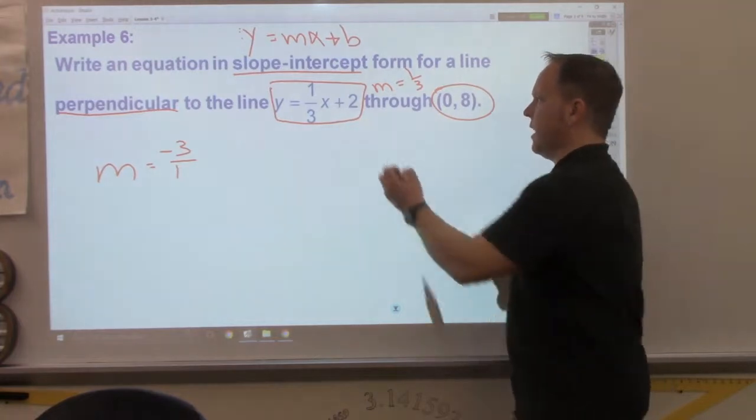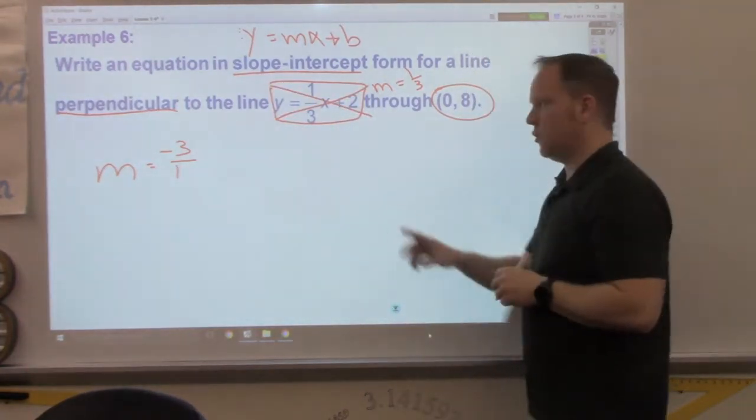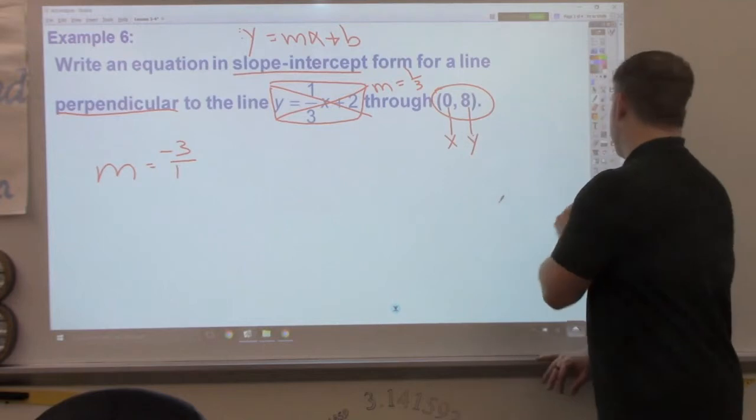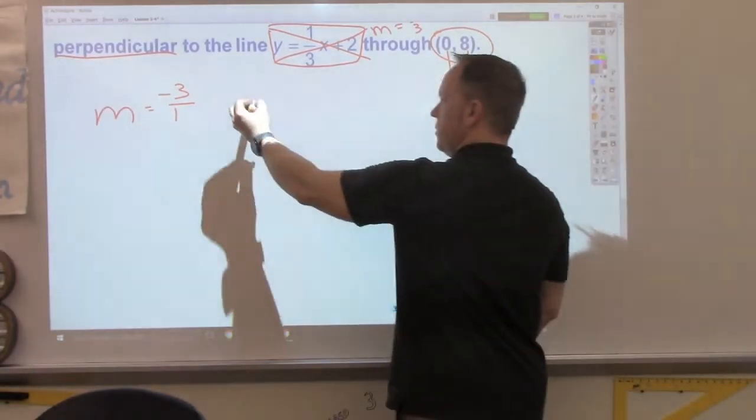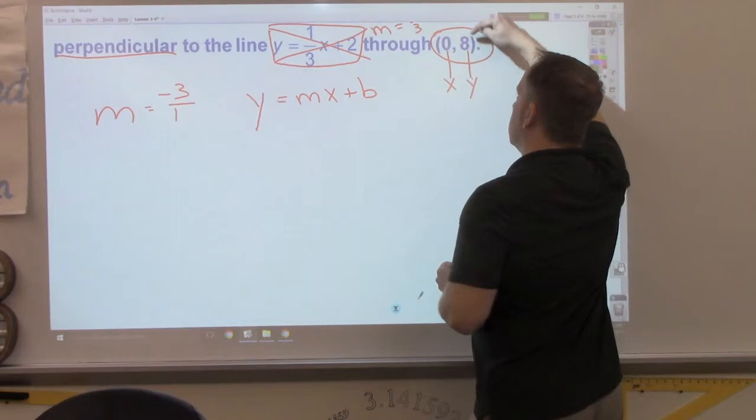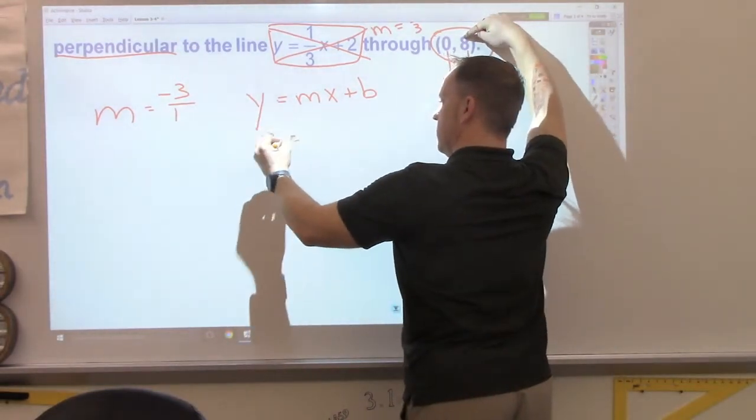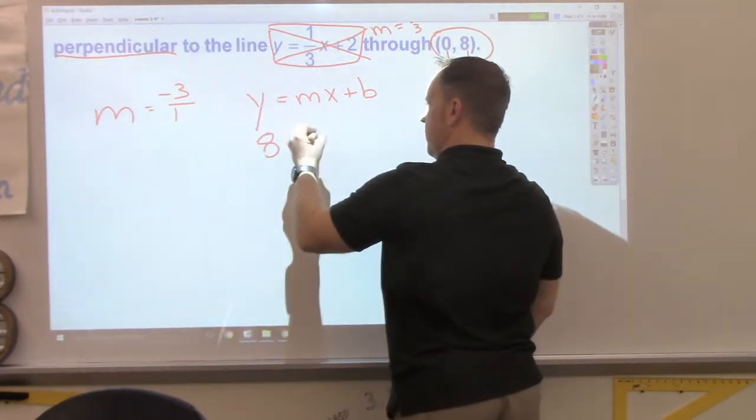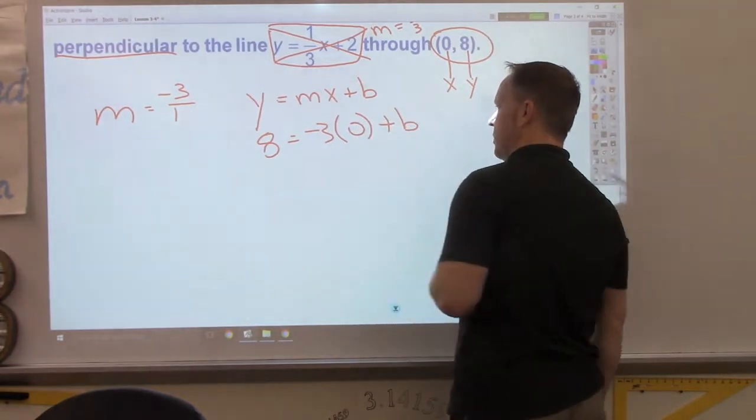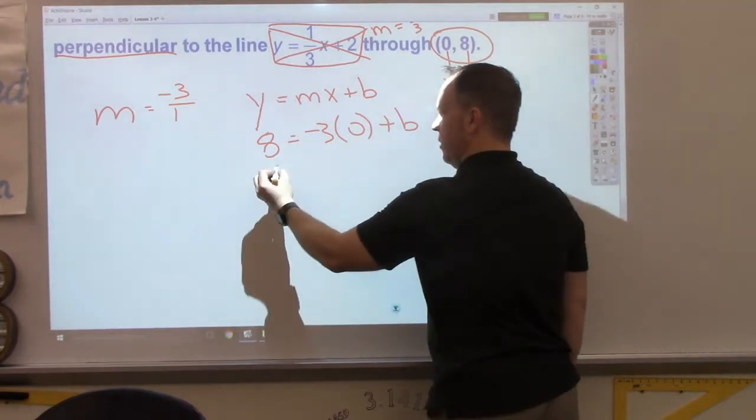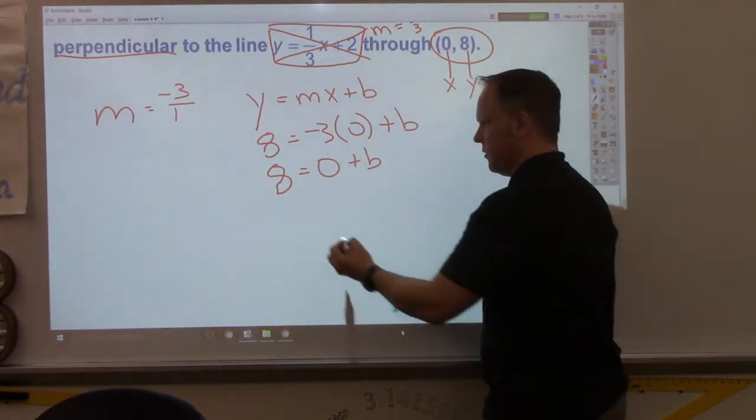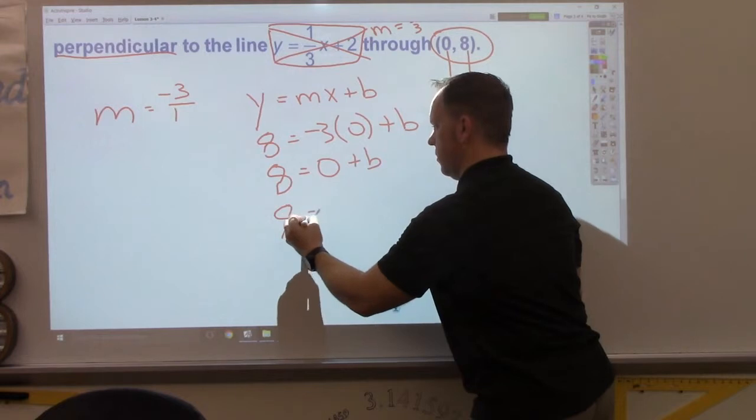Notice in the last problem, once I got the slope from this, I didn't use anything else. The 2 has nothing else to do with the rest of the problem. Here's my x. Here's my y. So, again, we've got to solve for b. Y is 8. M is negative 3. X is 0. Plus b. Negative 3 times 0. Plus b. So, in this case, my y-intercept is 8.